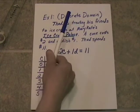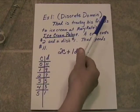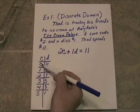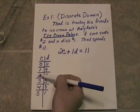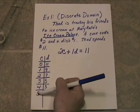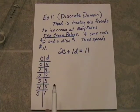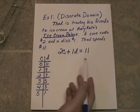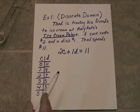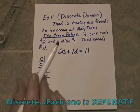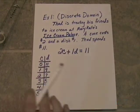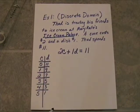That's why we say this is a discrete domain. There are only six values for which this equation works. Each one is separate — there's not an infinite number of possibilities here.